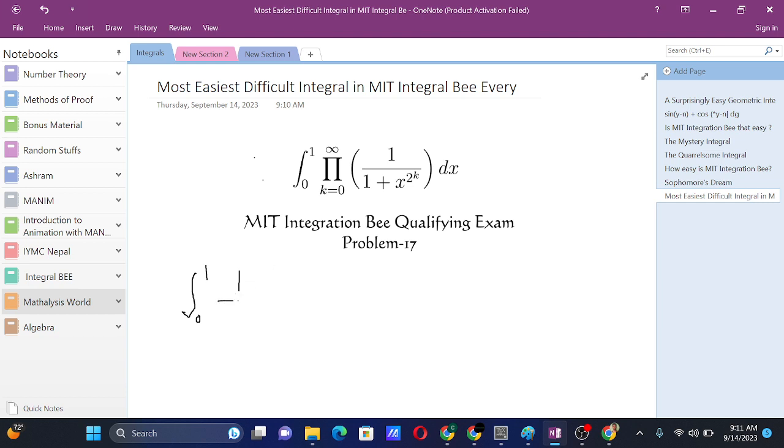Firstly, when k equals 0 we have 1 over (1 plus x to the power 1), since 2 to the power 0 is 1. When k equals 1 we have 1 over (1 plus x square). Then when k equals 2 we have 1 over (1 plus x to the power 4), and when k equals 3 we have 1 over (1 plus x to the power 8), and so on the series goes.